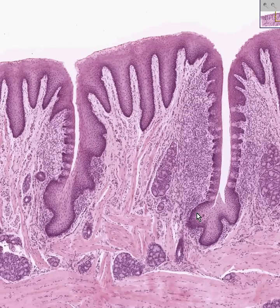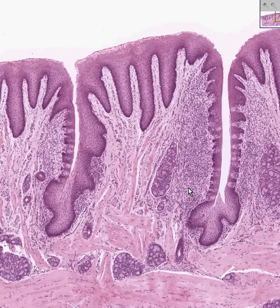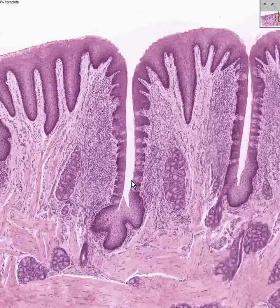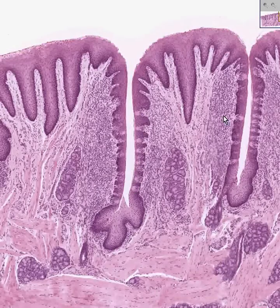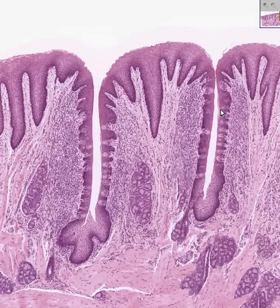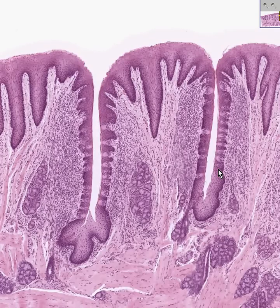Foliate papillae also contain taste buds. There are four kinds of papillae in your tongue. The circumvallate, which we saw, has taste buds. These foliate papillae, which are more squared off, also contain taste buds — very similar to the ones we saw in the circumvallate. And then you have fungiform papillae, which are more numerous anterior to the circumvallate papilla and much smaller.